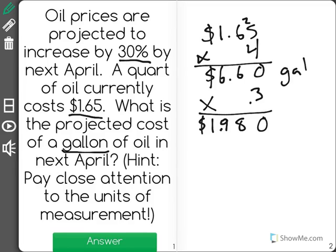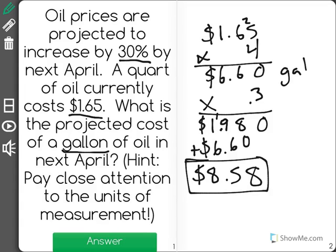$1.98 is how much more it will cost on top of the $6.60 it already does, so the projected cost of a gallon of gas would actually be $8.58 for the correct answer.